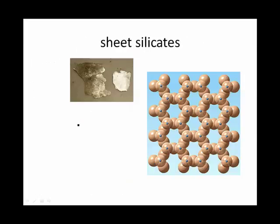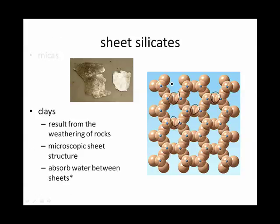Then there are sheet silicates where these double chain silicates are connected in all directions in a two dimensional sheet. Mica is a great example of a sheet silicate. Clays are also sheet silicates. They result from the weathering of rocks. And although you can't see the sheets in a clay the way you can in mica, they are there and they're microscopic. And the important thing about clay sheets is that they absorb water between the sheets, giving them the ability to expand and contract.